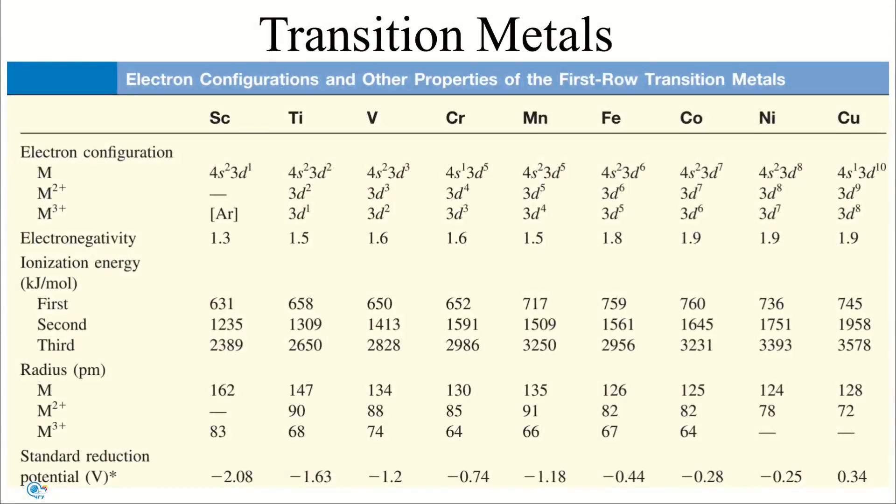Most of the transition metals have a close-packed structure in which each atom has a coordination number of 12. Furthermore, these elements have relatively small atomic radii. The combined effect of closest packing and small atomic size results in strong metal bonds.